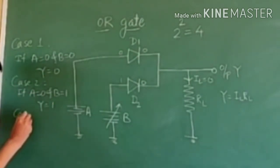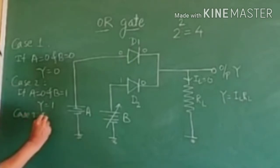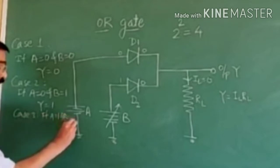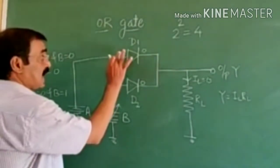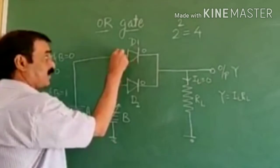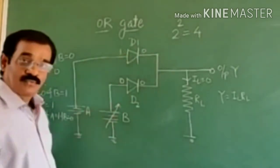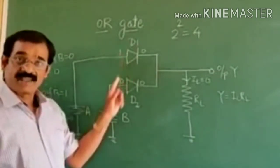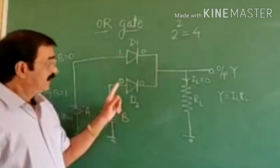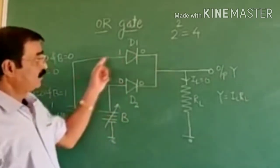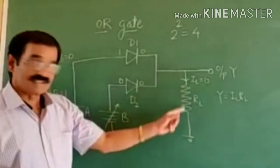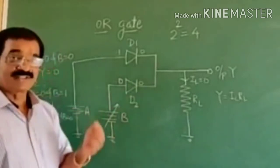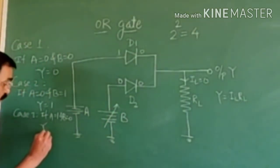Now consider Case 3: if A is 1 and B is 0. At that time there is high voltage at the anode of diode D1 and low voltage at the anode of diode D2. So diode D1 becomes forward biased and D2 becomes reverse biased. The current flows through diode D1 and through load resistance R1. Again the load current is not 0, therefore output is not 0 — that means output is 1.